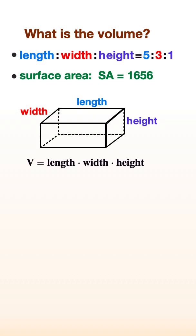The volume of a rectangular prism is length times width times height, so we need to find those three values. Let's write an equation for surface area because we know its value.